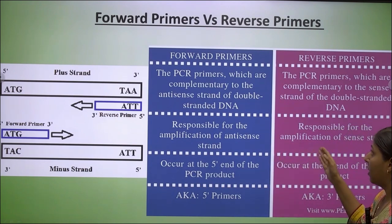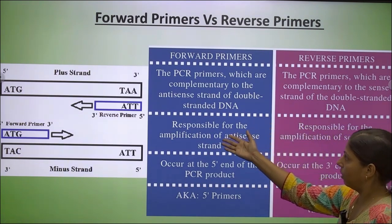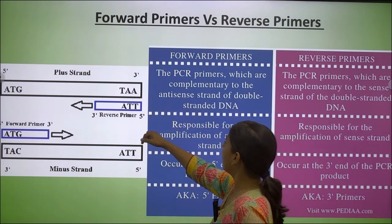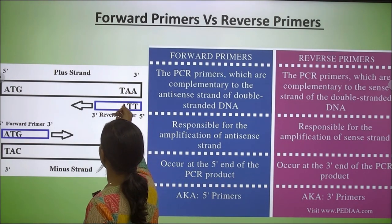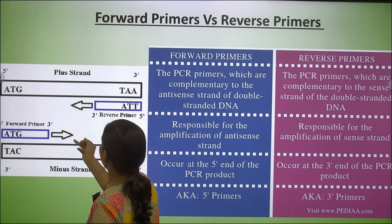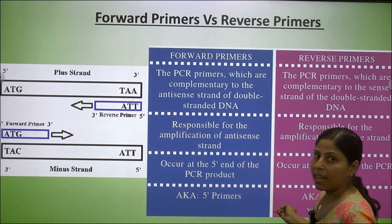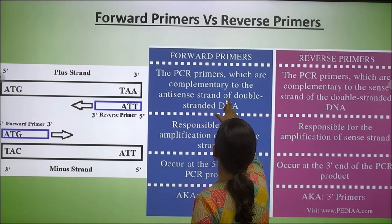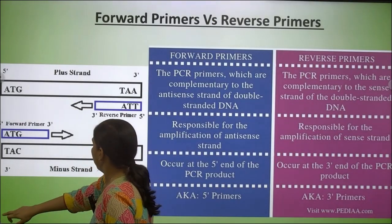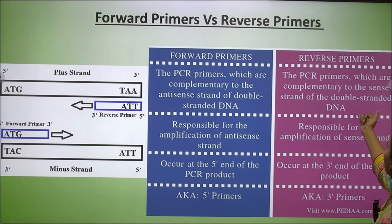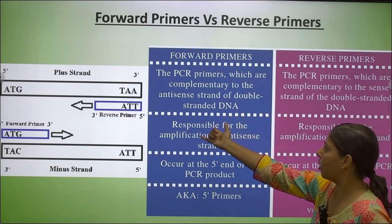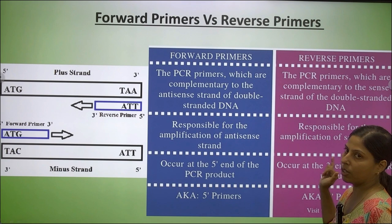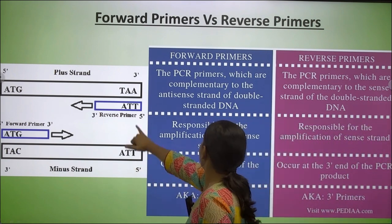Considering the difference between forward and reverse primers: the sense strand and antisense strand are also known as the plus and minus strands. The reverse primer is made from the plus strand, and the forward primer is made from the minus strand. Forward primers are complementary to the antisense strand of the double-stranded DNA, and the reverse primer is complementary to the sense strand. The reverse primer is responsible for amplification of the sense strand.